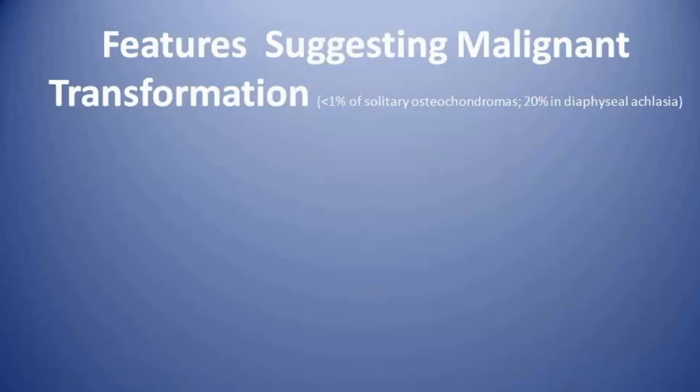This is the case of a solitary osteochondroma, or exostosis. Osteochondroma is a benign cartilaginous tumor, but there are certain features which suggest malignant transformation into chondrosarcoma. This malignant transformation is seen in less than 1% of cases of solitary osteochondroma, and in 20% of cases in diaphyseal aclasis.